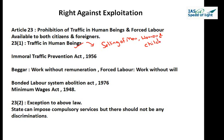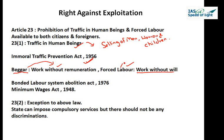The term 'traffic in human beings' means the selling of men, women, and children. For this, Parliament passed the Immoral Traffic Prevention Act, 1956. 'Begar' means work done without remuneration. 'Forced labor' means work done without the will of the laborer. So Article 23 talks about three things: traffic in human beings, begar, and similar forms of forced labor.